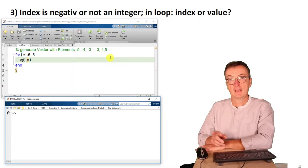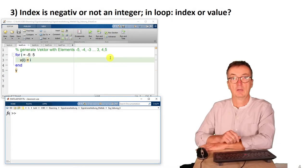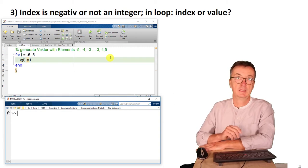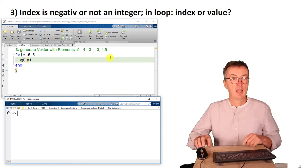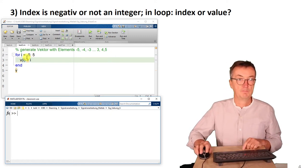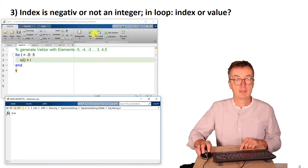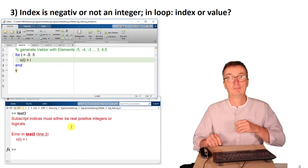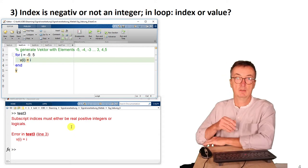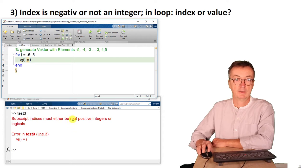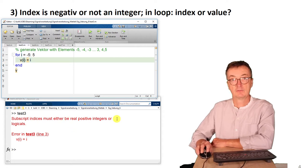Third problem, quite often the index of a matrix or a vector is said to be negative or not to be an integer. And then you run into problems. Have a look at this for loop. i, the index, goes up from minus 5 to 5 and the vector v at the position i is said to be i. In this case, MATLAB or Octave would give an error message and it's worthwhile reading that. It's already telling us that the index has to be a real positive integer.